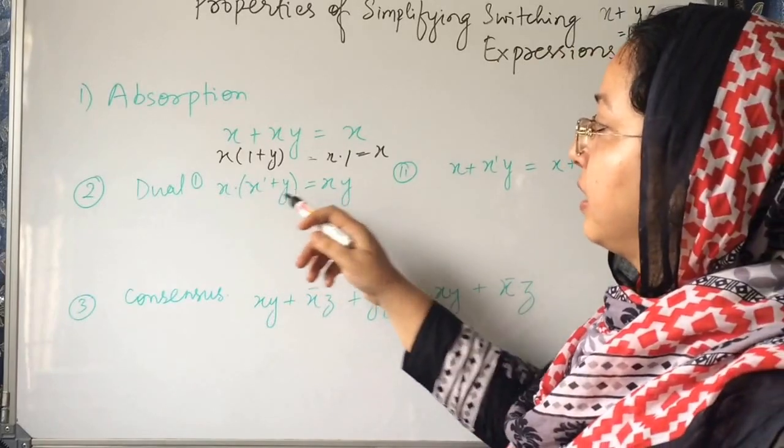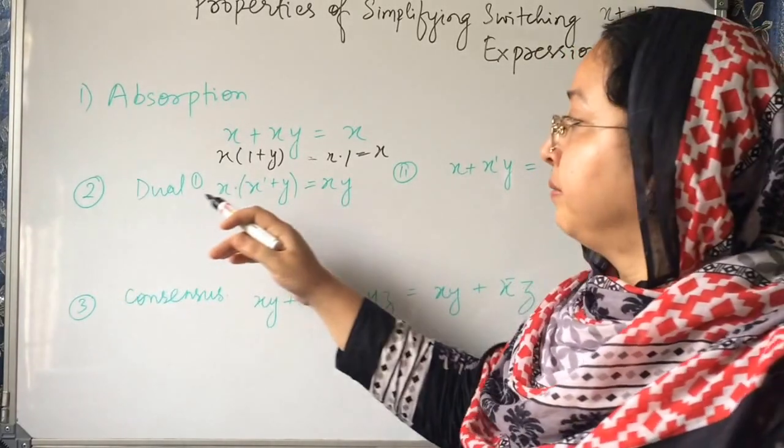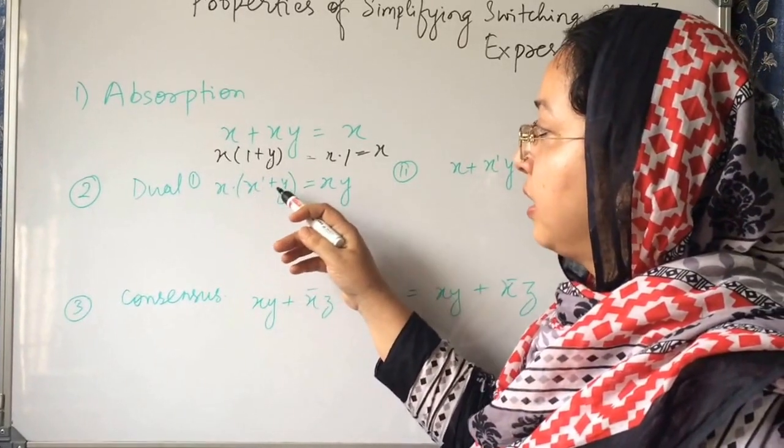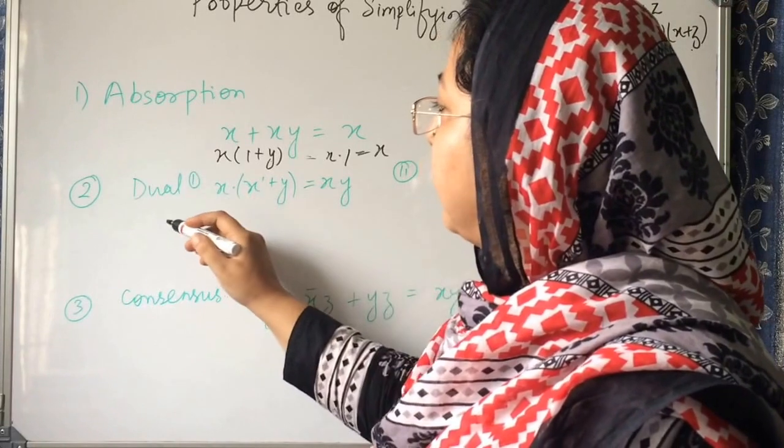Now x dot x dash plus y is equal to xy. Second property we use is Dual. This says that x dot x dash plus y is equal to xy. How is it true? Let us expand this.